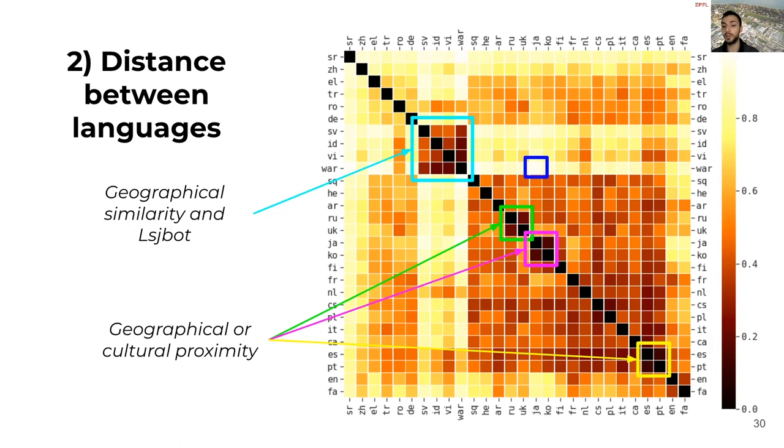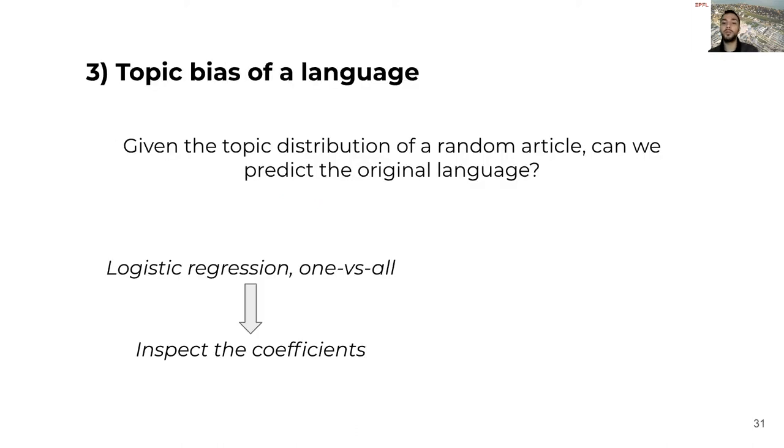And finally, we can observe some languages where there is very little overlap, like Waray and Japanese. This analysis is great to have an overview on the distance between languages, but how can we understand what topics are mostly associated with one language? A possible approach is to use a regression and study what topics are predictive of one language. We can formulate the task as given the topic distribution of a random article, can we predict the original language? To test this approach, we train a logistic regression by using as a positive example the topics distribution obtained from articles of the language of interest, and as a negative sample from all the other languages. The resulting model gives us a convenient way to study the coefficients and to inspect what topics are strong or negative predictors of the language.